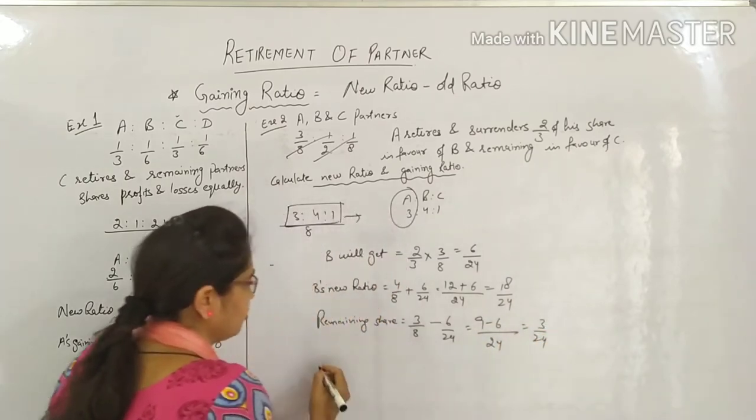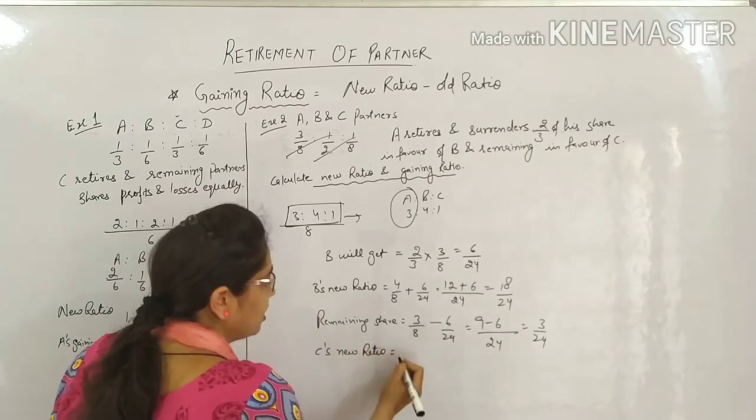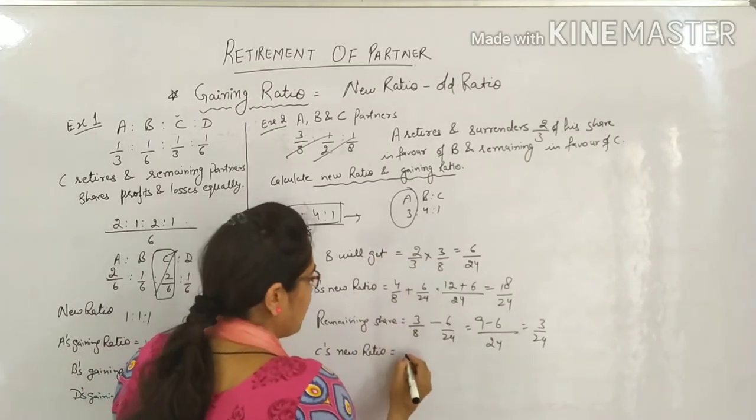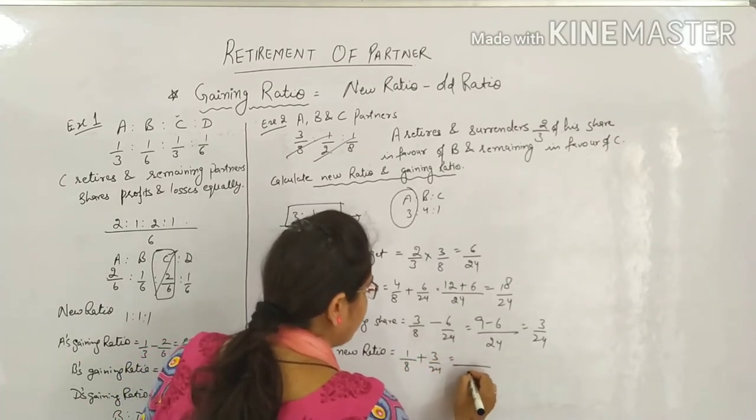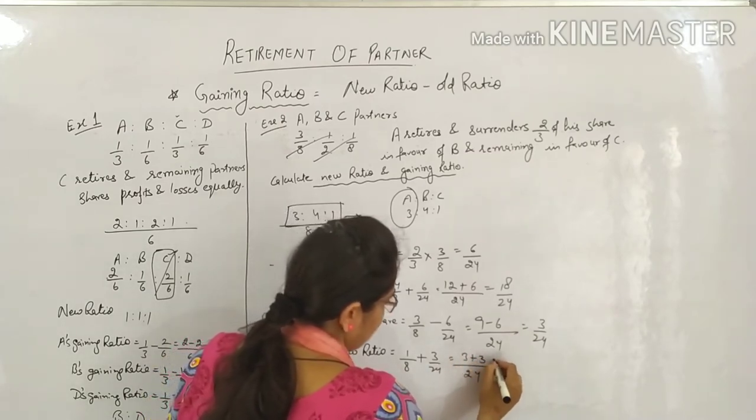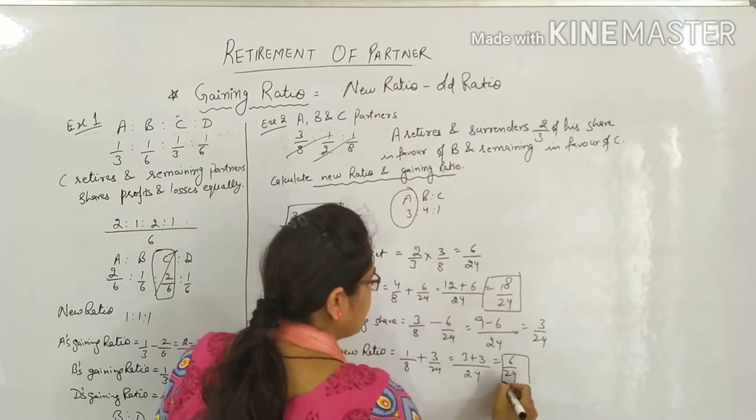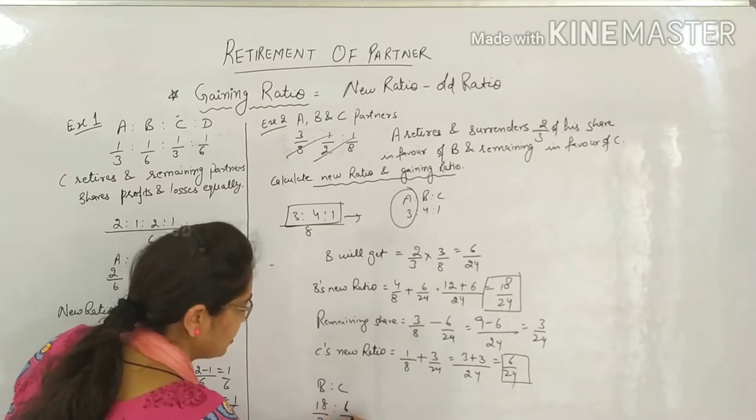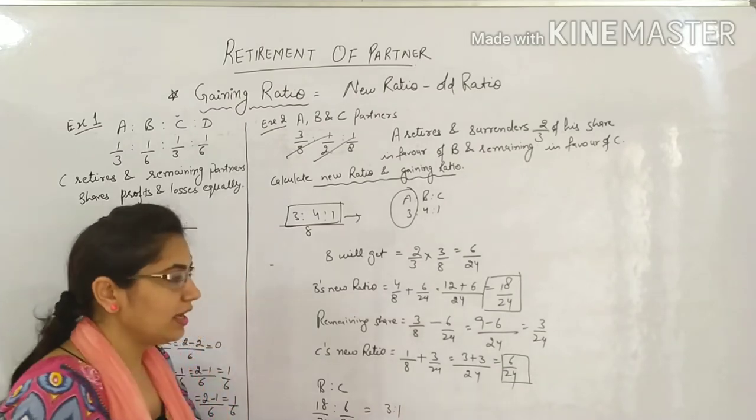That is 3 by 24. So what will be C's new ratio? Whatever C had earlier, this portion will be added to it. How much did C have? 1 by 8 plus 3 by 24 gets added. 24: 8 threes are 24, 3 plus 3 equals 6 by 24. So we got B's new ratio and we got C's new ratio. So B is to C, ours became 18 by 24 and 6 by 24. Can be cut from table of 6: 6 threes are 18, 6 ones are 6. This is your new ratio.